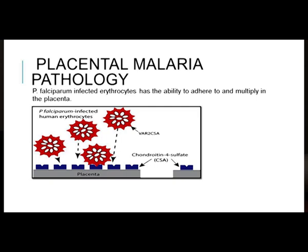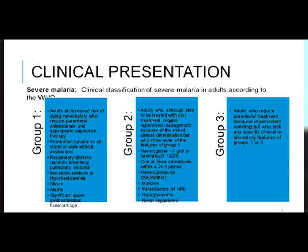Next we'll look at clinical presentation. The most important thing with malaria is to have a high index of suspicion and not to miss severe malaria. Using the WHO classification of severe malaria, Group 1 requires immediate ICU care due to immediate risk to life. This includes prostration — inability to sit, stand, or walk without assistance — confusion, coma or cerebral malaria.